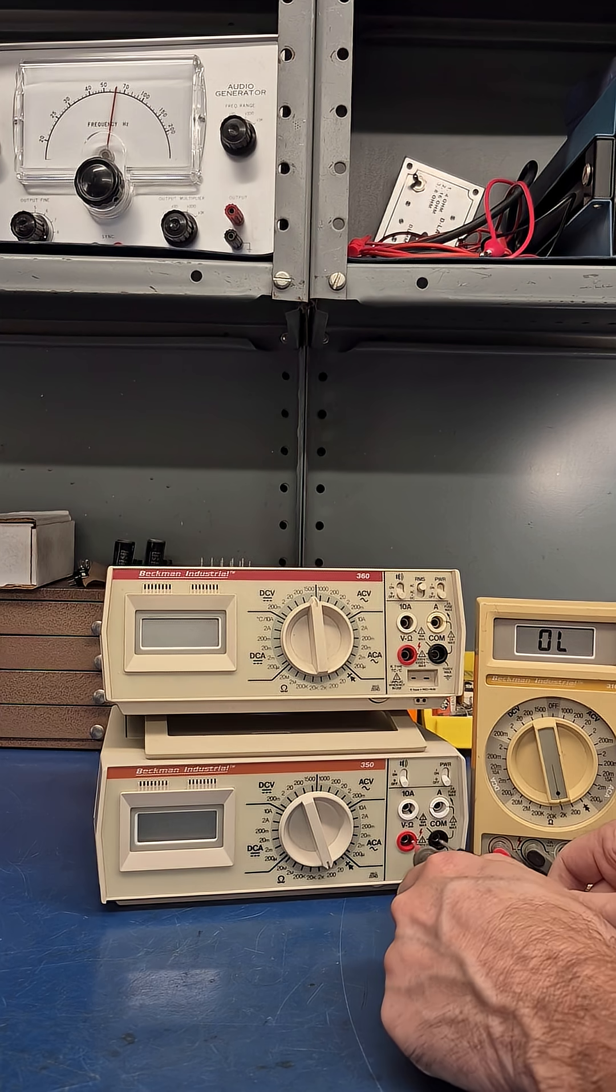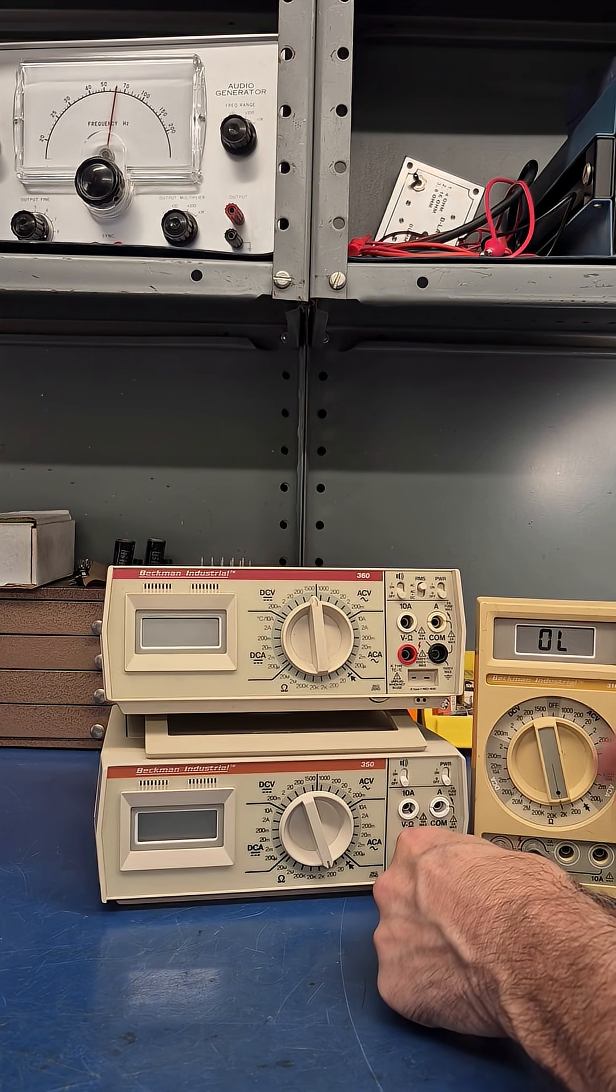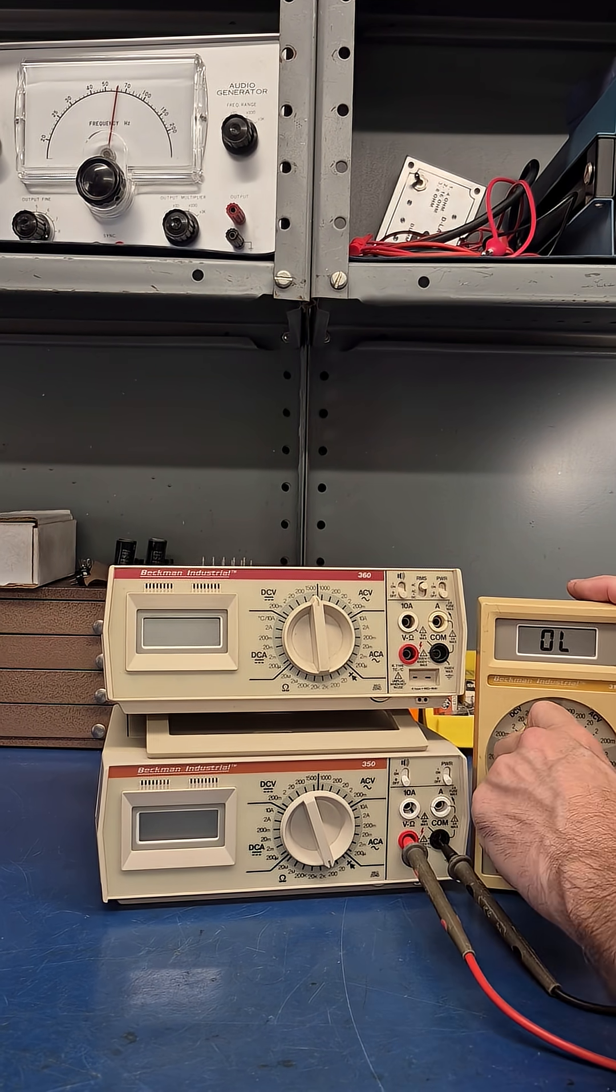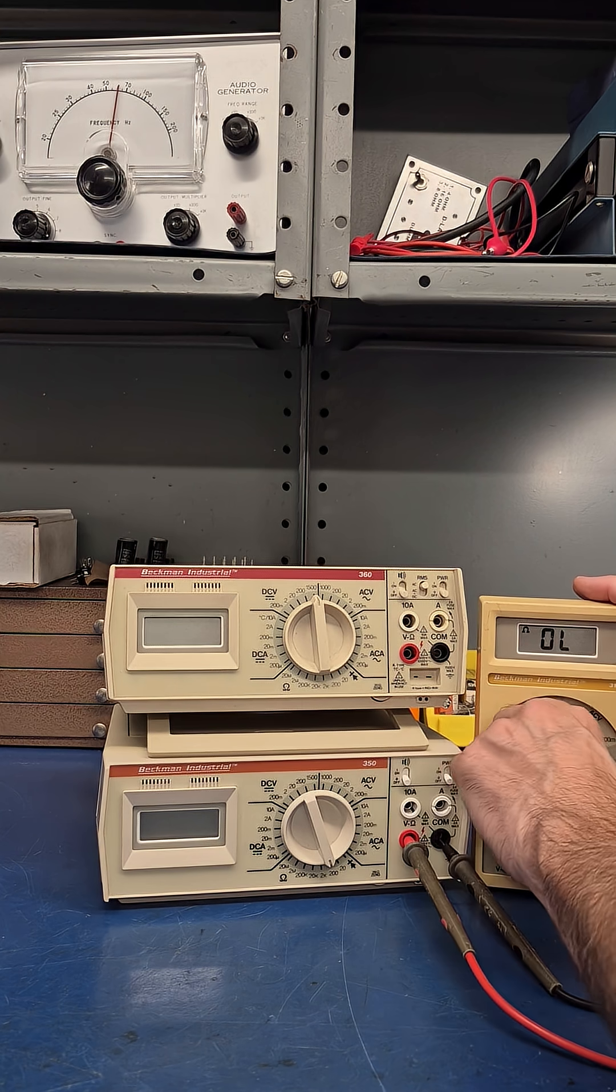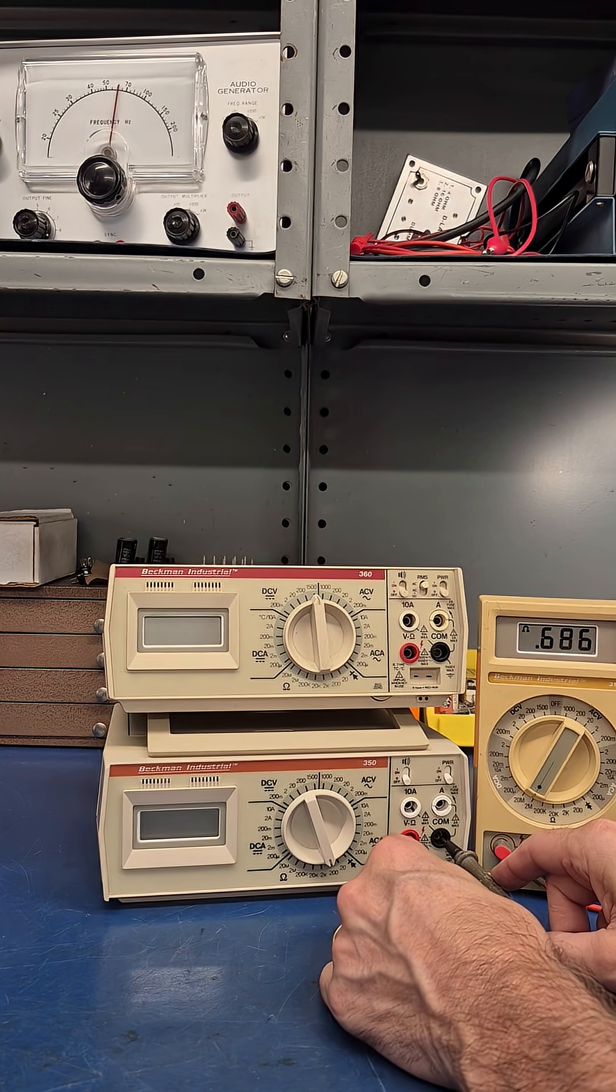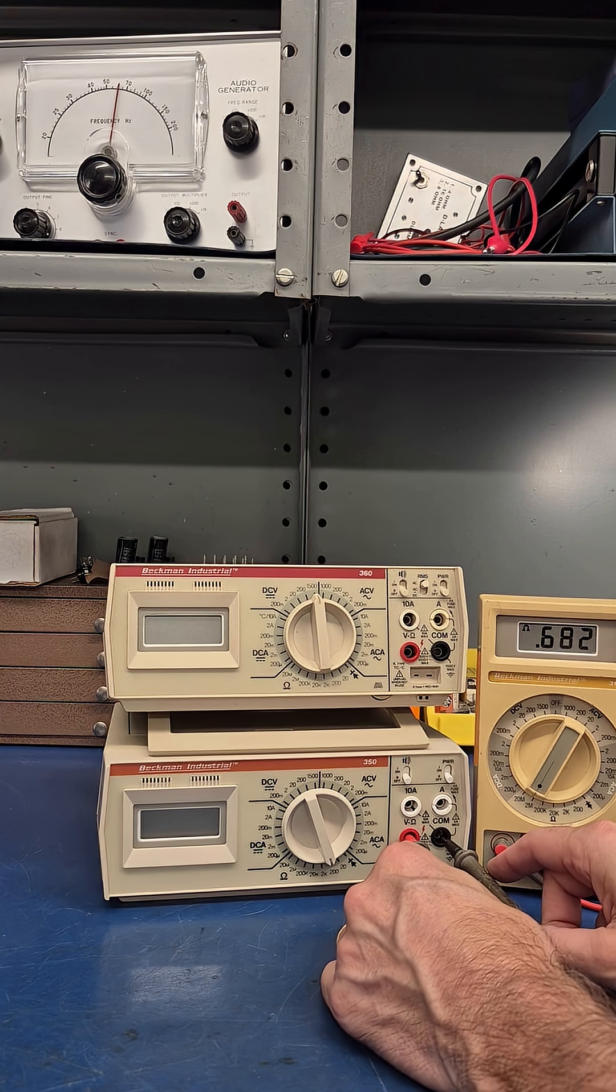Now let's take a look at this meter. Let's see, we have nothing. She's open. There's 200K, there's 2 meg. I have almost 700K.